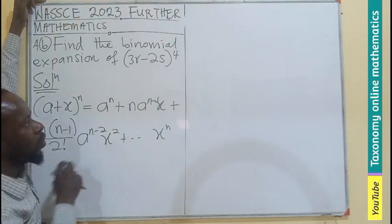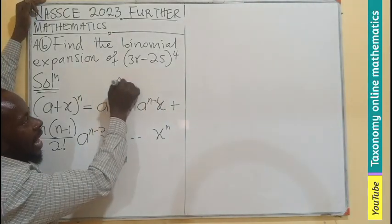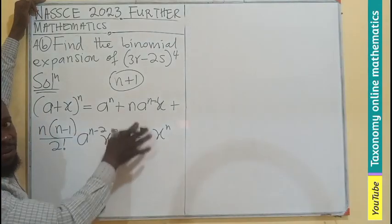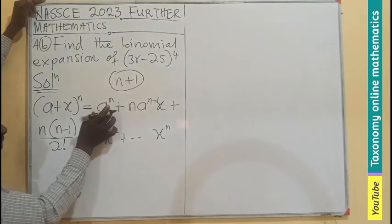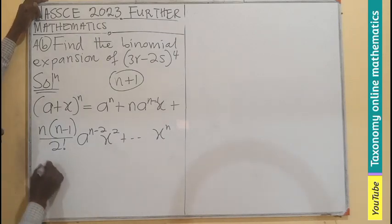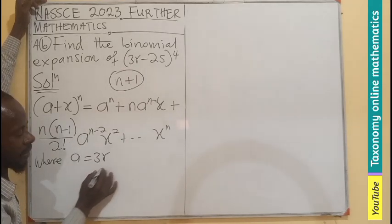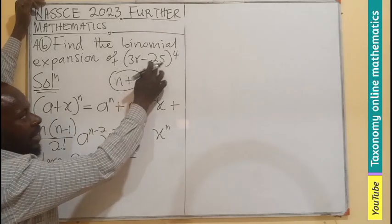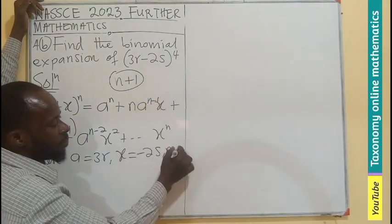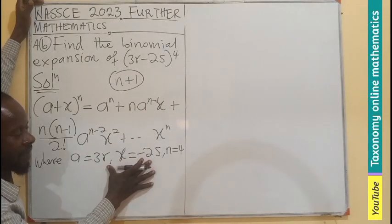There are many terms in the series. The number of terms is N plus 1, meaning in this case we are having 5 different terms. Now let's do the substitution: A from the question is 3R, X which is the second term is negative 2S, and N is the power 4. So we replace A, X, and N with the values we have in the question.